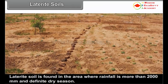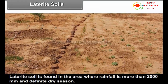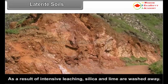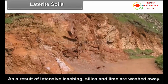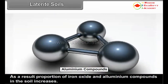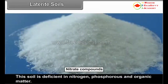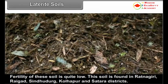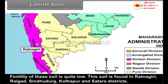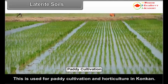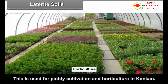Laterite soil is found in areas where rainfall is more than 2000 mm with a definite dry season. As a result of intensive leaching, silica and lime are washed away, and the proportion of iron oxide and aluminium compounds in the soil increases. This soil is deficient in nitrogen, phosphorus and organic matter. Fertility of these soils is quite low. This soil is found in Ratnagiri, Raigarh, Sindhudurg, Kolhapur and Satara districts, and is used for paddy cultivation and horticulture in Konkan.